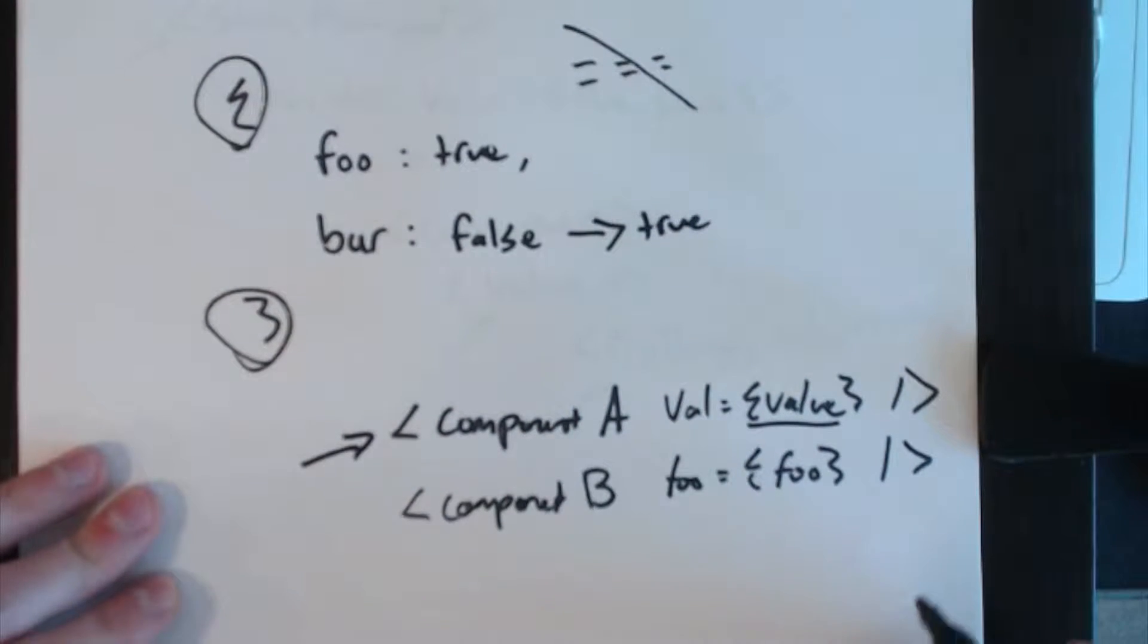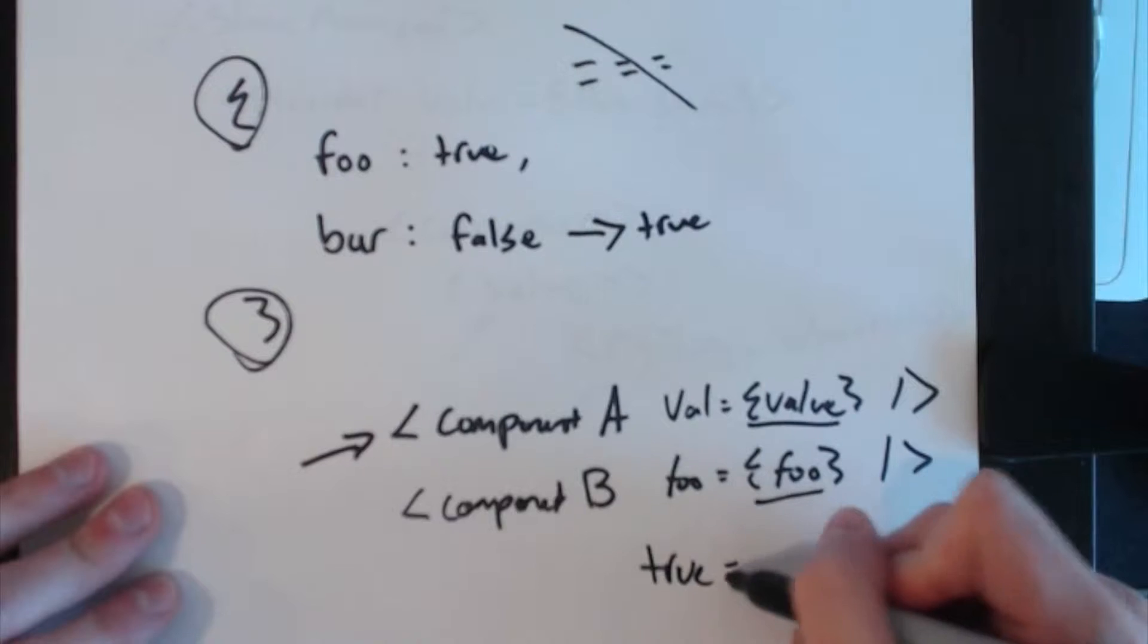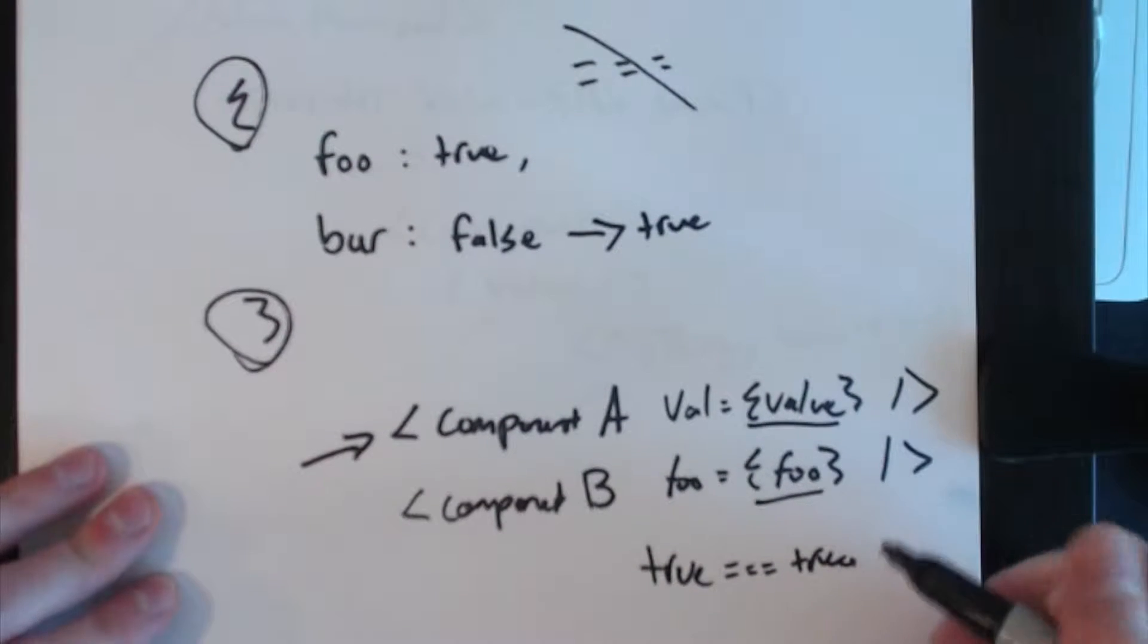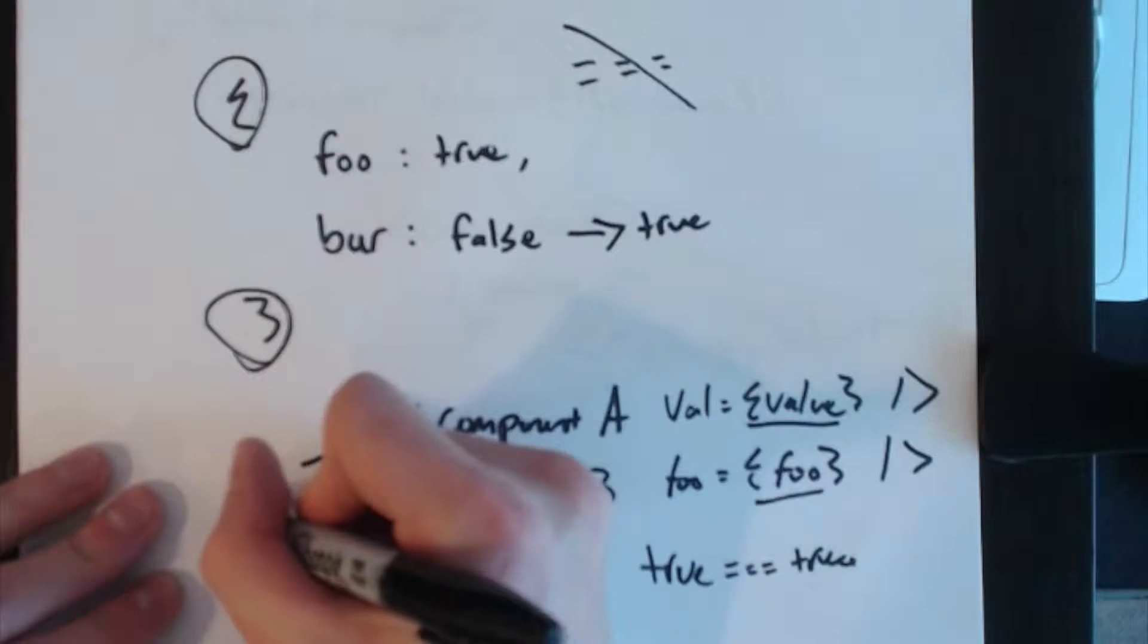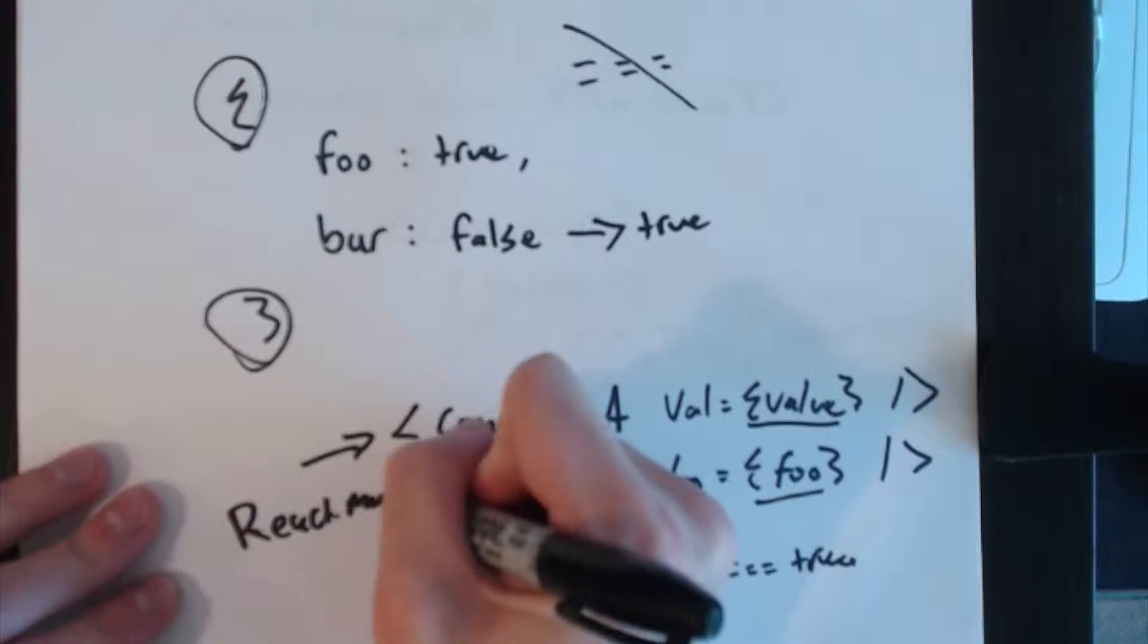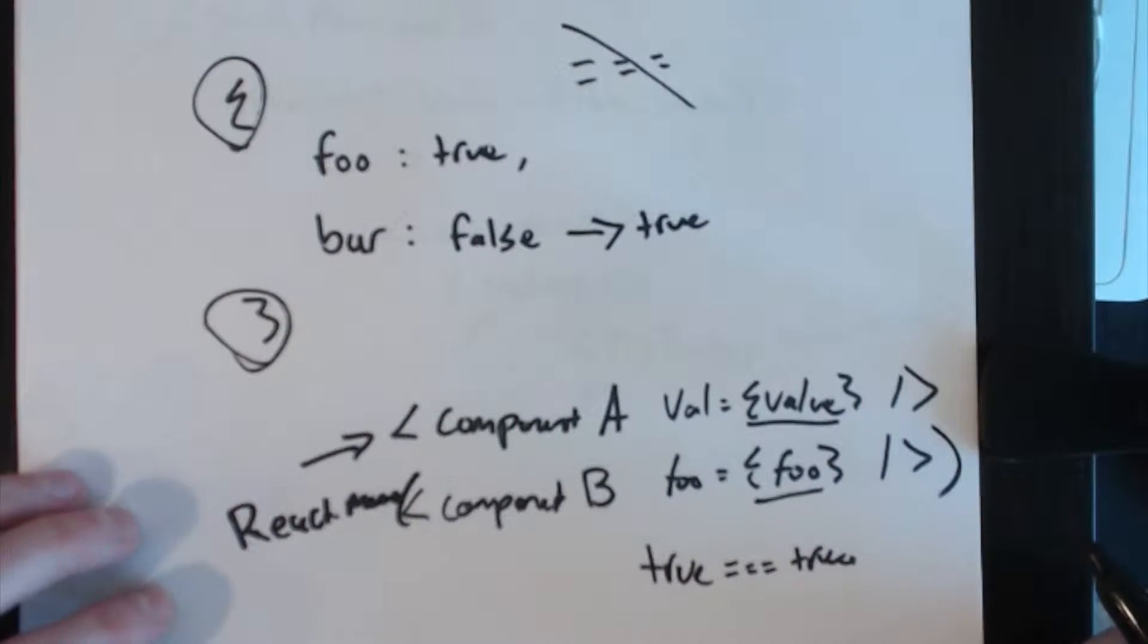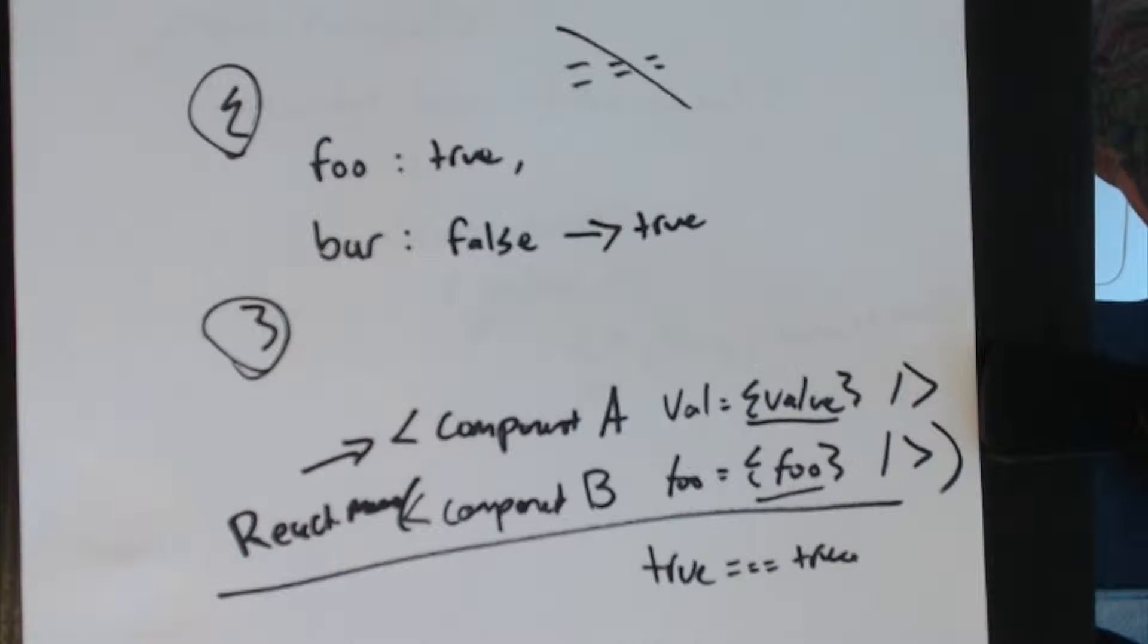Component A therefore would re-render with a new object. Component B, however, is only taking in foo as a prop. Now it would normally update, but if it's a pure component it would bail out of updates if the props are the same. And since true is equal to true, this component would not update as long as it's wrapped in React.memo or extends React.PureComponent. It's memoized, meaning it does not re-render if the props are shallow equal—in this case true is shallow equal to true.